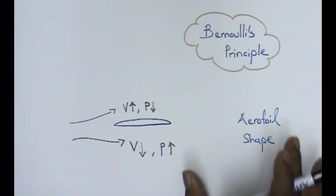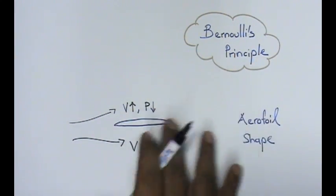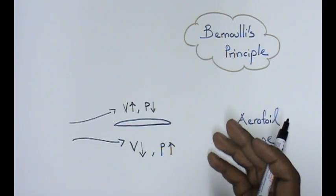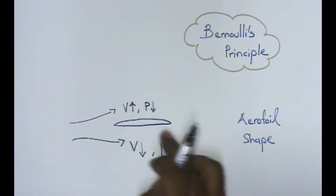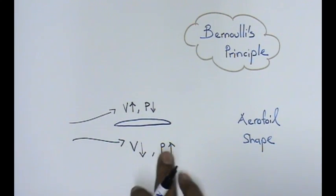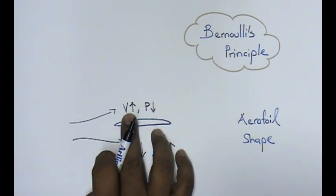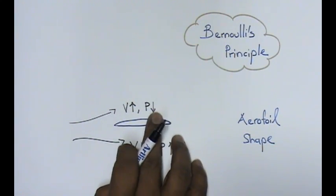So what we can understand from Bernoulli's principle, using his design, he has actually generated two regions of different pressure and velocity. In this design, we call it aerofoil shape, the air that goes down has low velocity but high pressure. And the air that goes up has high velocity but low pressure.